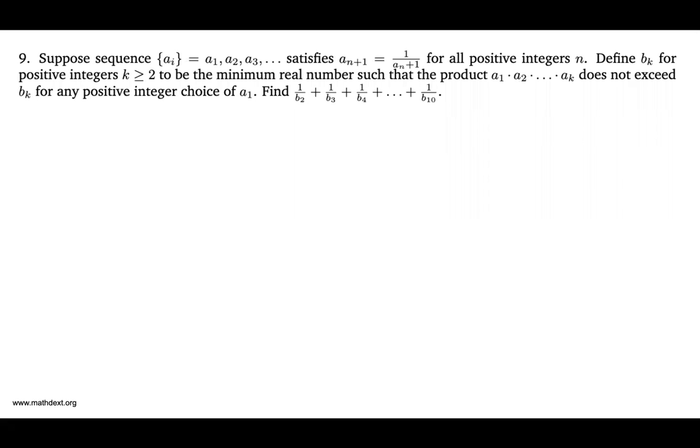We define another sequence b sub k for positive integers k greater than or equal to 2 to be the minimum real number such that the product a1 times a2 times dot dot dot times ak does not exceed bk for any positive integer choice of a1. Find 1 over b2 plus 1 over b3 plus 1 over b4 plus dot dot plus 1 over b10.